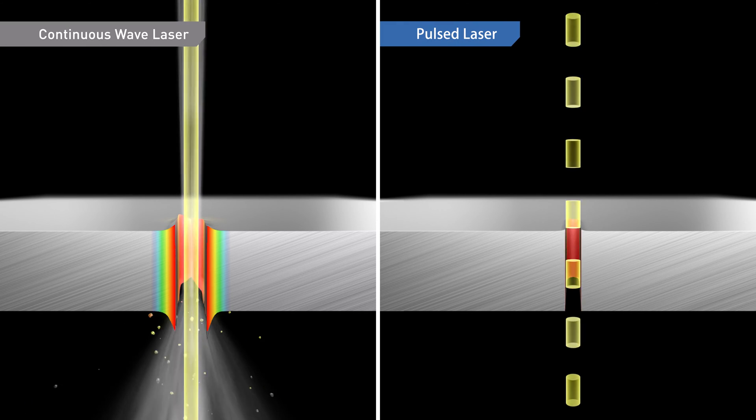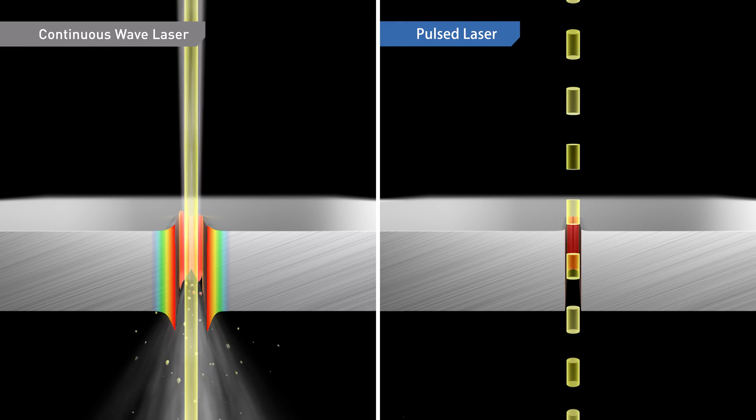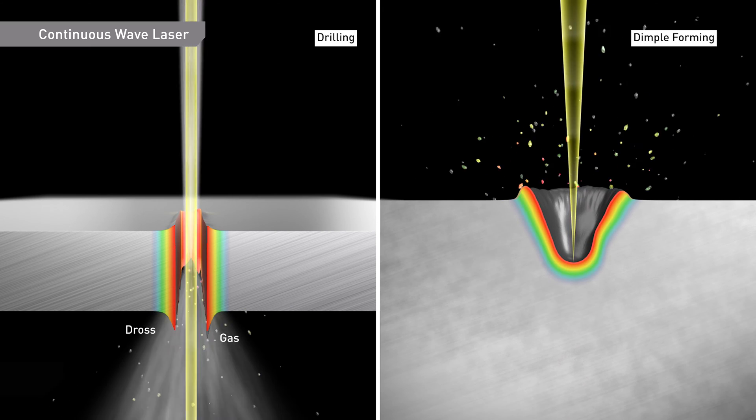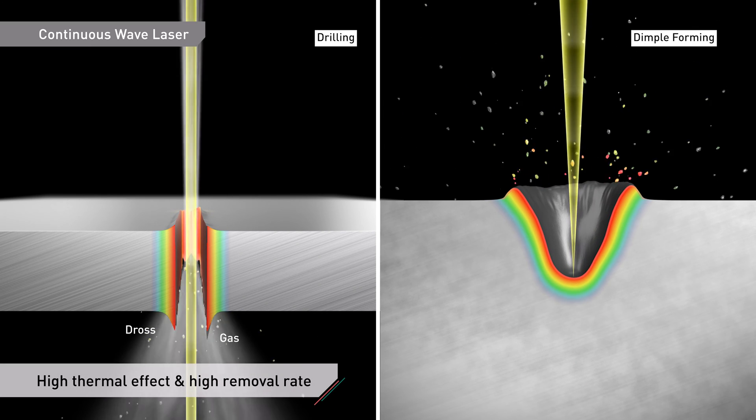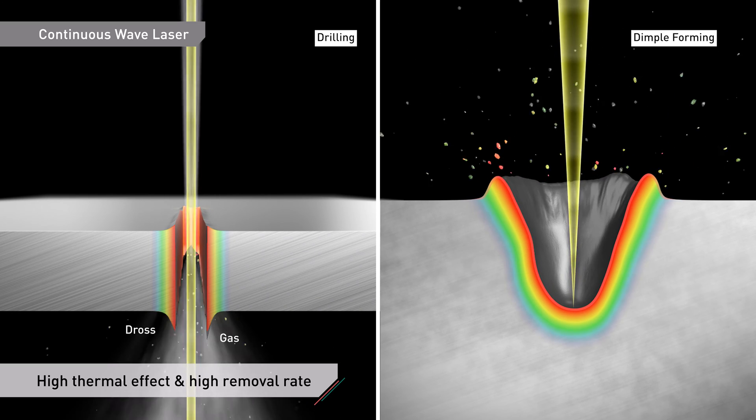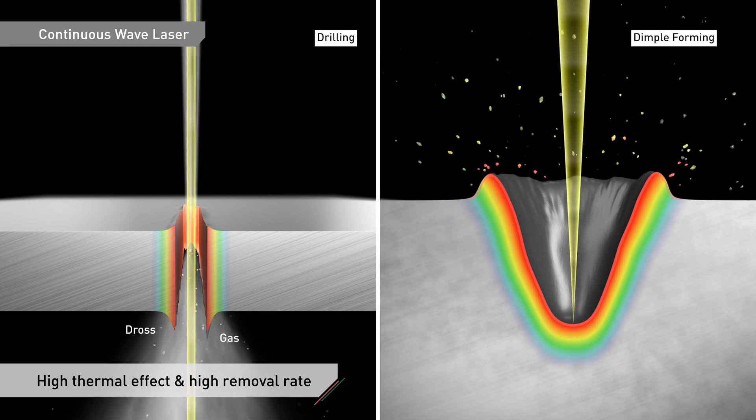Lasers are classified as either continuous wave lasers or pulsed lasers. With a continuous wave laser, the laser's energy raises the material's temperature and removes material from the surface by melting and vaporization.